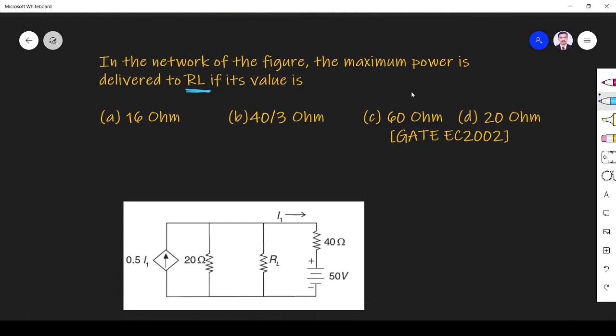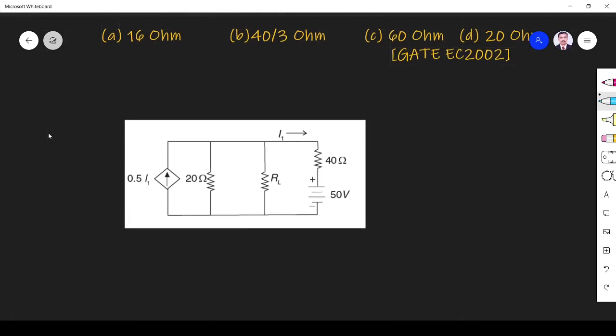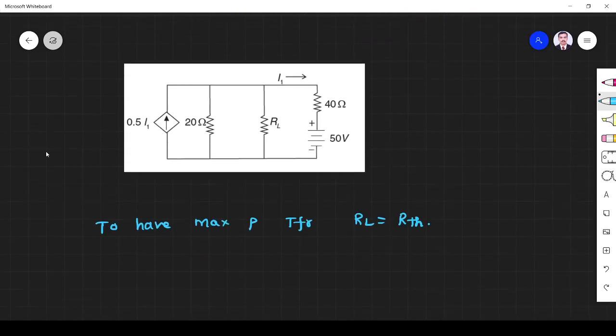Here they ask what is the value of RL. So value of RL for maximum power is nothing but to have maximum power transfer, the RL should be equal to R-thevenin. So I have to find R-thevenin first. So that is the answer.